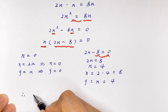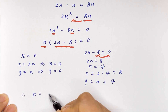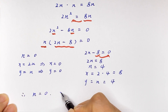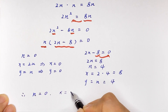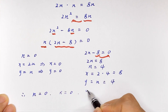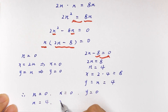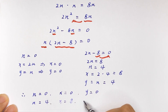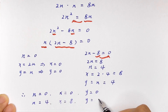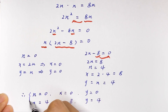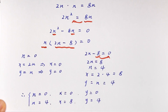So when the value of n is equal to 0: x is equal to 0 and y is equal to 0. When the value of n is equal to 4: x is equal to 8 and y is equal to 4. Thank you for watching and see you in the next video, bye.